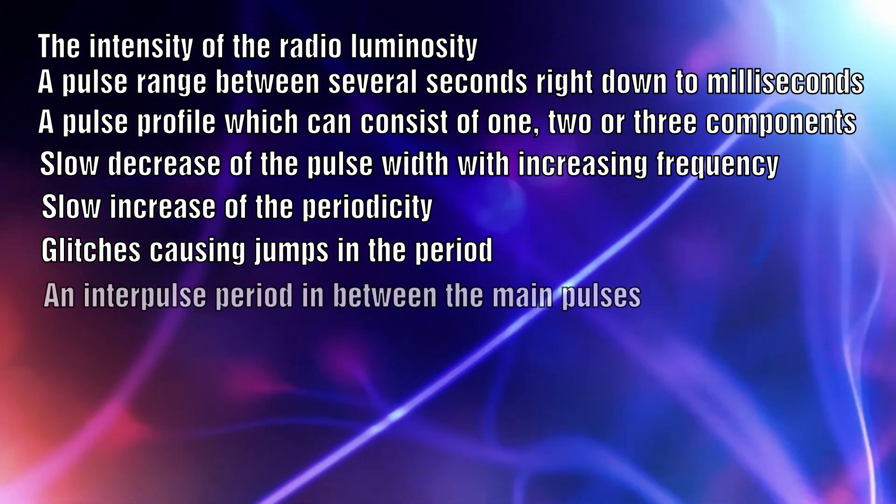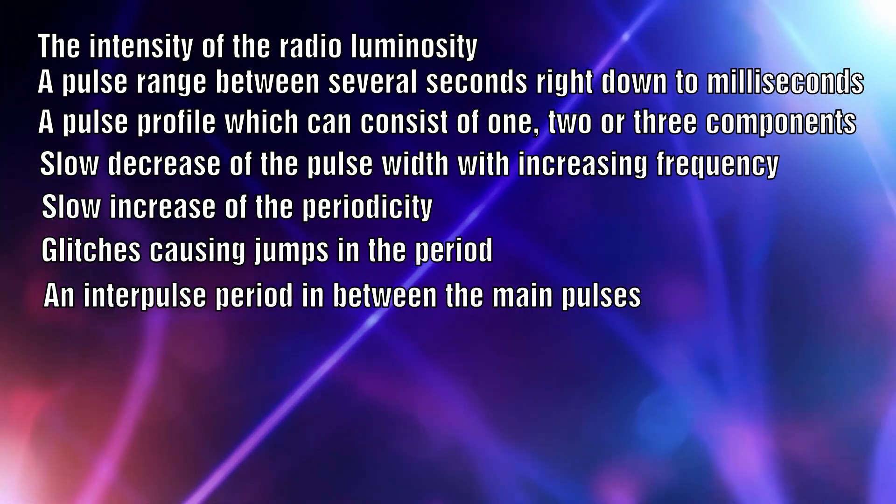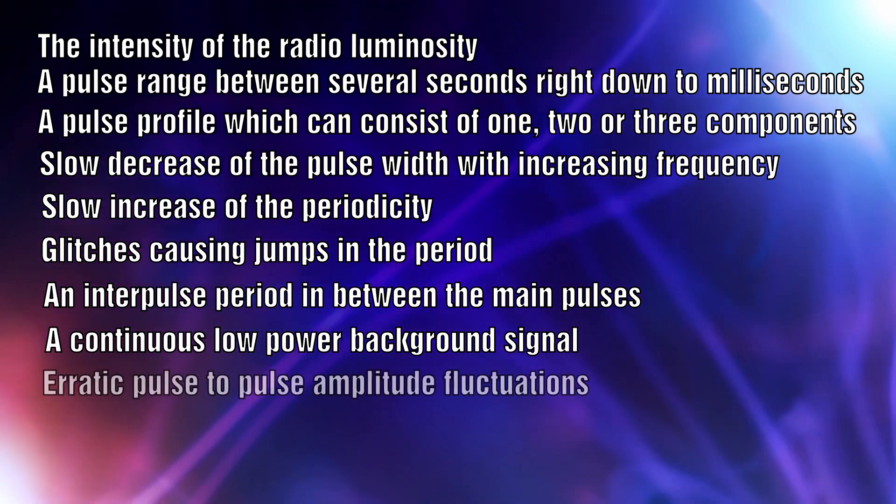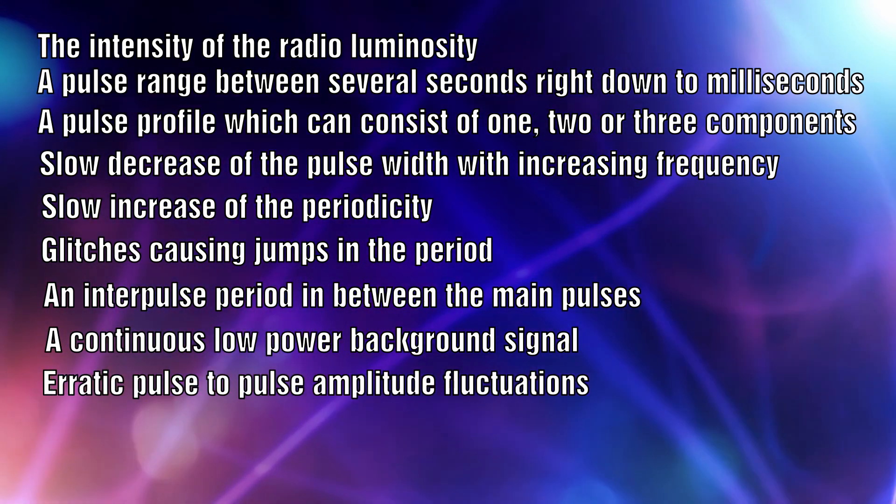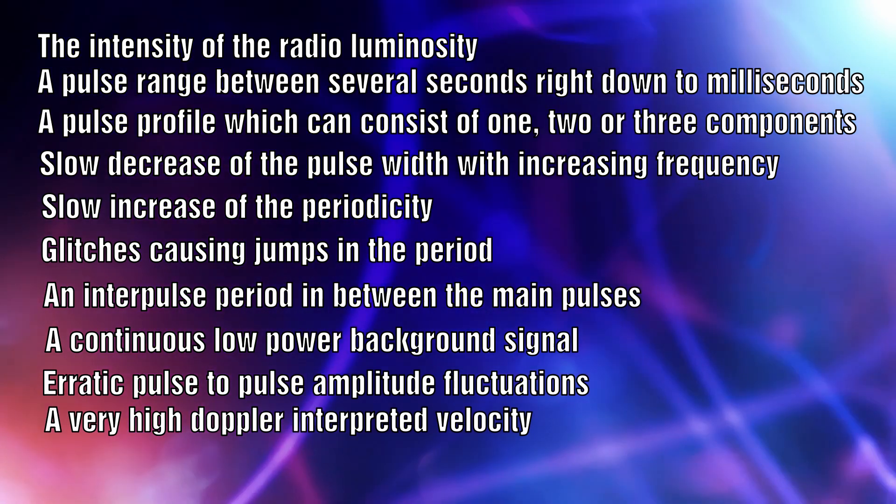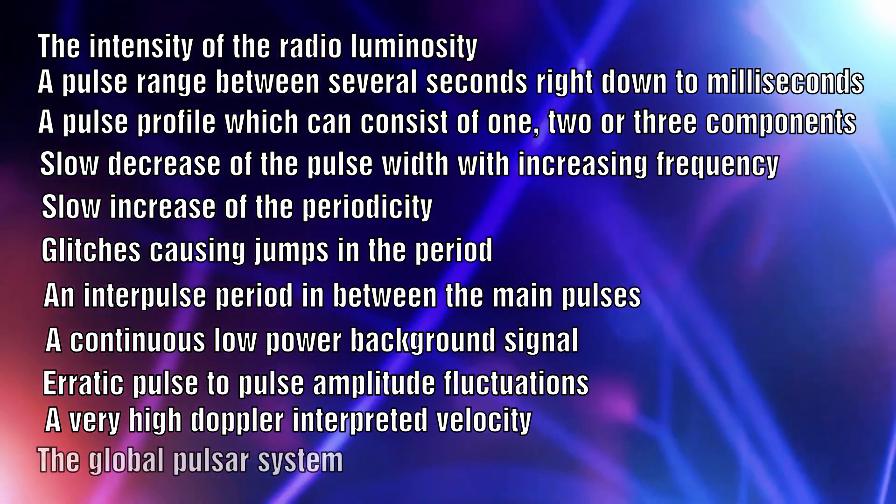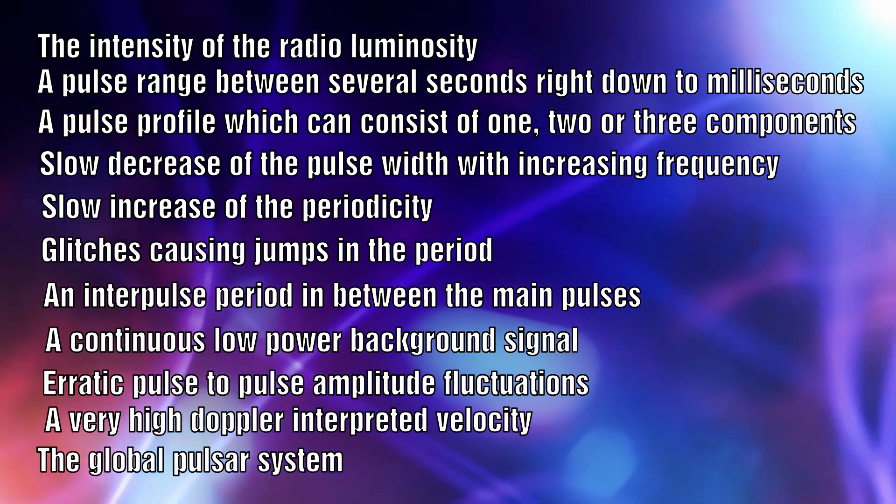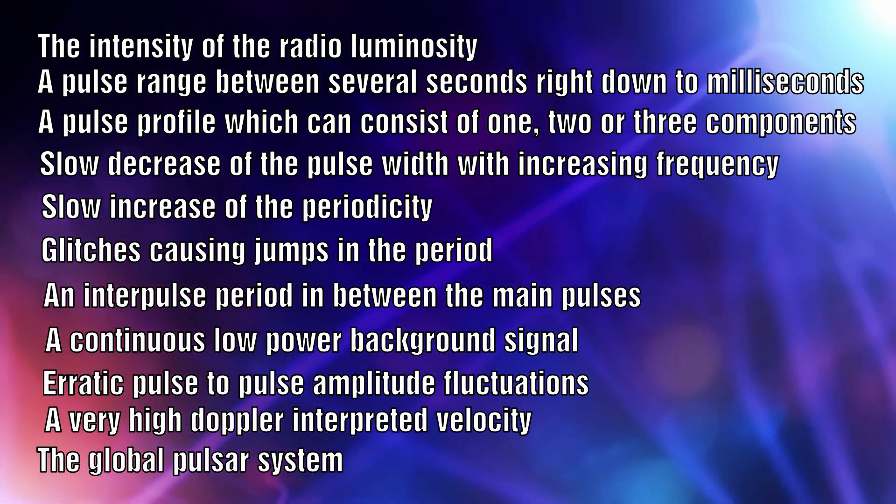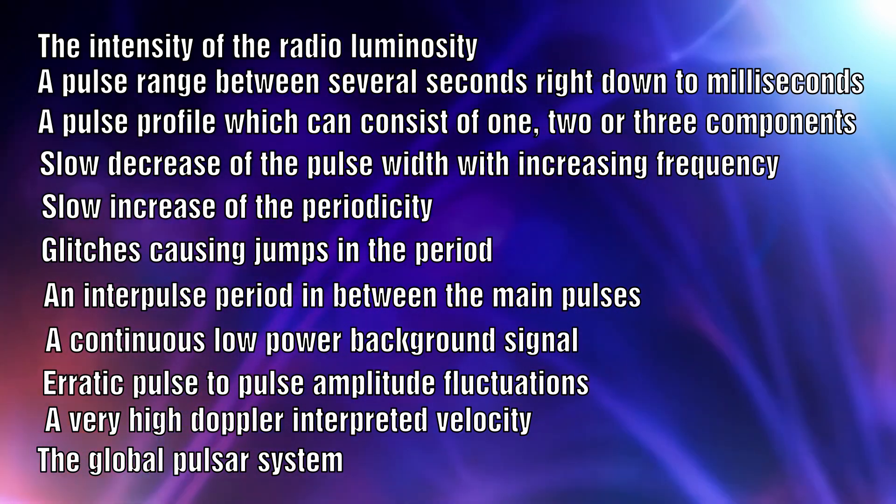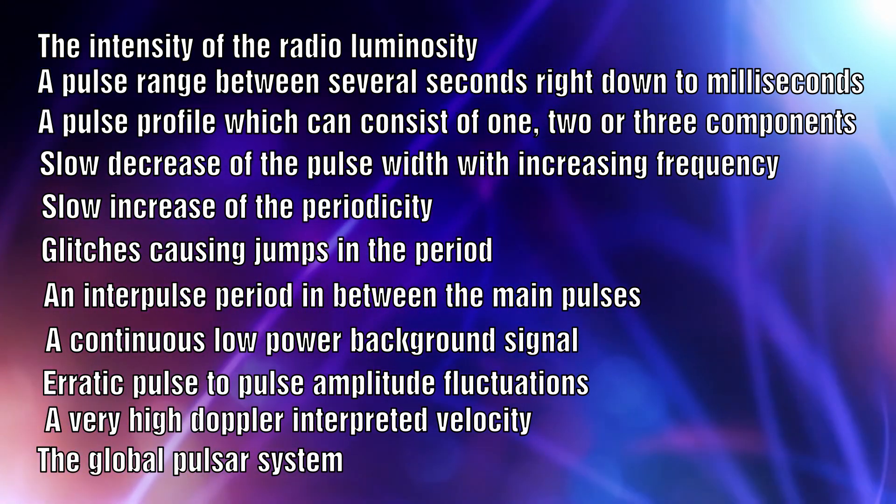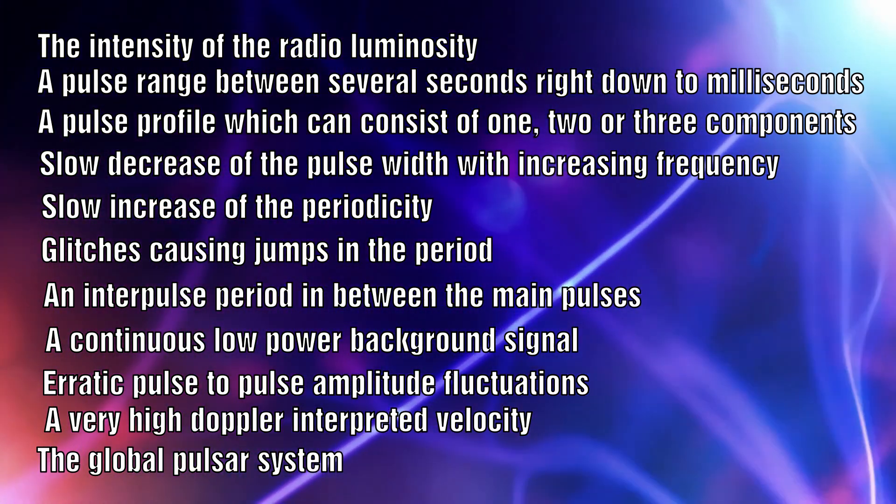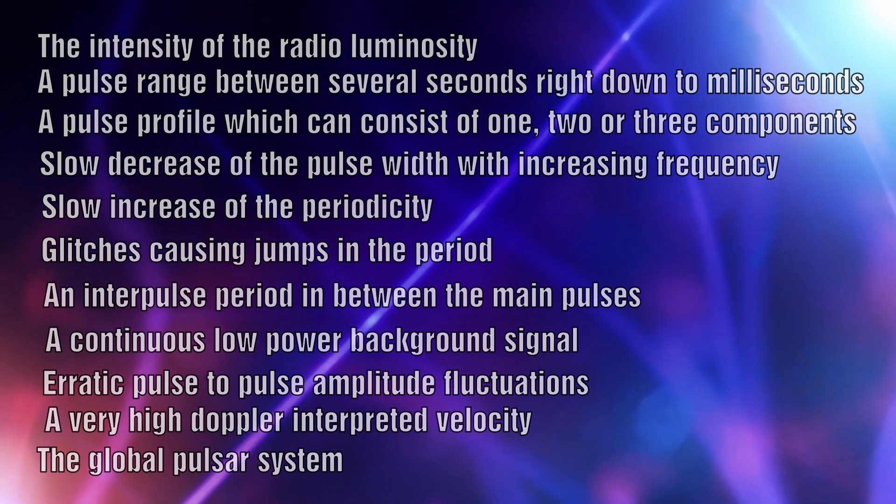Other features include an interpulse period in between the main pulses, a continuous low power background signal, erratic pulse to pulse amplitude fluctuations, a very high Doppler interpreted velocity, and the global pulsar system and topology which extends beyond the pulsar and includes wisps, jets, and other features symmetrically oriented beyond the active region. There are many suggestions that have been put forward which address one or two of these features, but none so far are able to address all of them together.